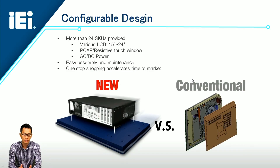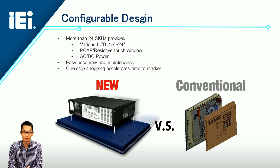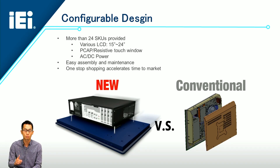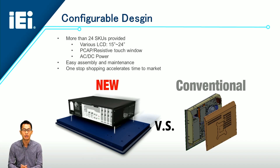Conventionally, the panel PC system and panel size are fixed. But thanks to our modularized design of the Flex series, you can choose the panel size you want, the system configuration, the touch window type, and AC or DC power type. We have more than 24 SKUs provided based on your system requirement, and it's easy to assemble and maintain — with only one screwdriver you can do everything on your own. So the Flex series is one-stop shopping to accelerate your time to market for AI.